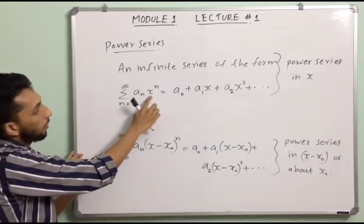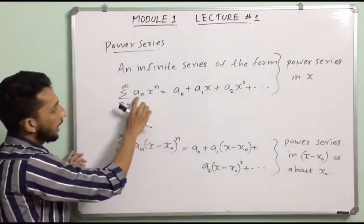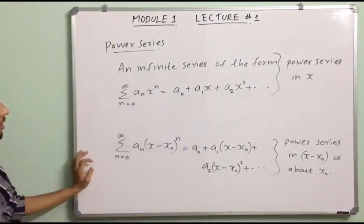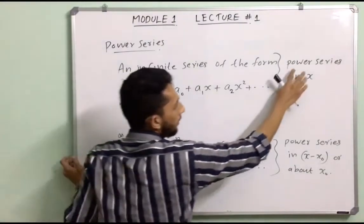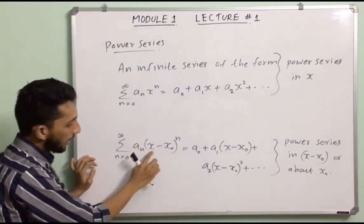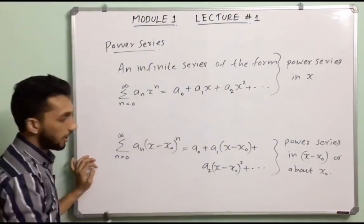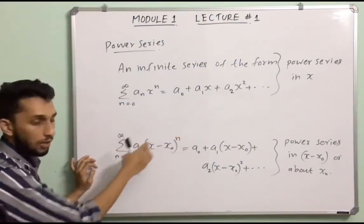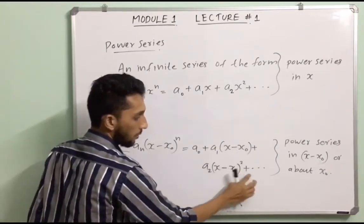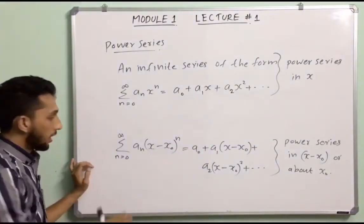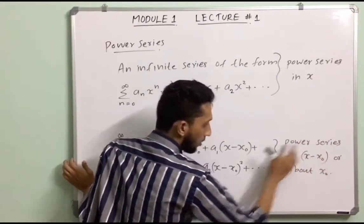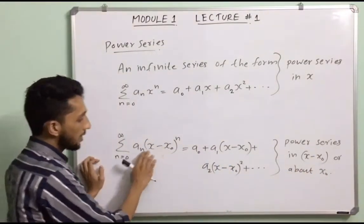If we have n=0, a₀ into x raised to 0; n=1, a₁ into x raised to 1, giving a₀ plus a₁x plus etc. More generally, summation n from 0 to infinity of aₙ(x − x₀)ⁿ equals a₀ plus a₁(x − x₀) plus a₂(x − x₀)² plus etc. This is the power series in (x − x₀).